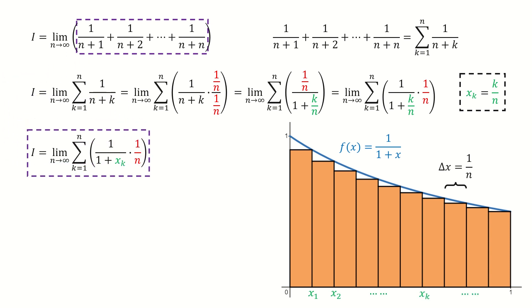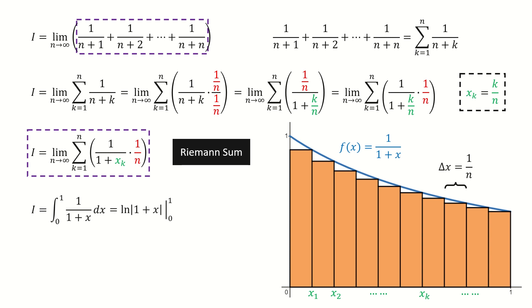So if we look at this equation, the right-hand side is actually the Riemann sum. Therefore we can write it into an integral. And then we just integrate it.